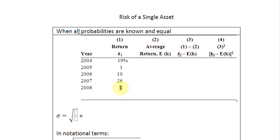What we need to do as the first step is to find out the average return and write it down in column number 2. So we write down the average return and we call it E(k) or you could also write it as simply k bar. How to find out the average return when all probabilities are known and equal? We simply find out the arithmetic average of these numbers. We're going to add all these numbers up and divide the sum by the number of time periods. So let's add them up: 19 plus 1, 20, plus 1, plus 10, 30, plus 26, 56, and plus 4 gives you 60.